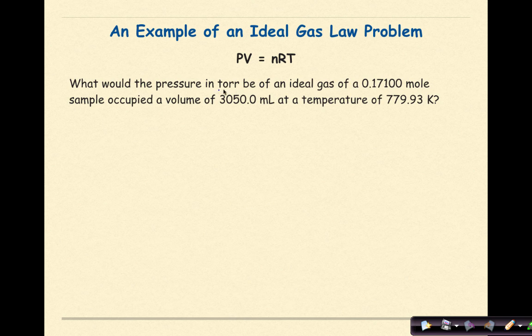One final problem. What would the pressure in torr be of an ideal gas of a 0.17100 mole sample occupied by a volume of 3050 milliliters at a temperature of 779.9 Kelvin? So PV equals nRT.